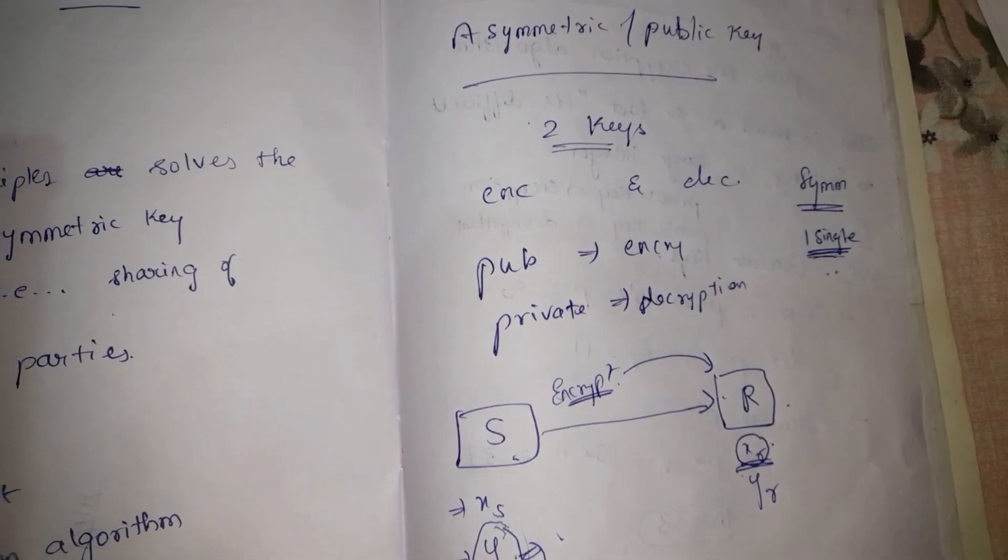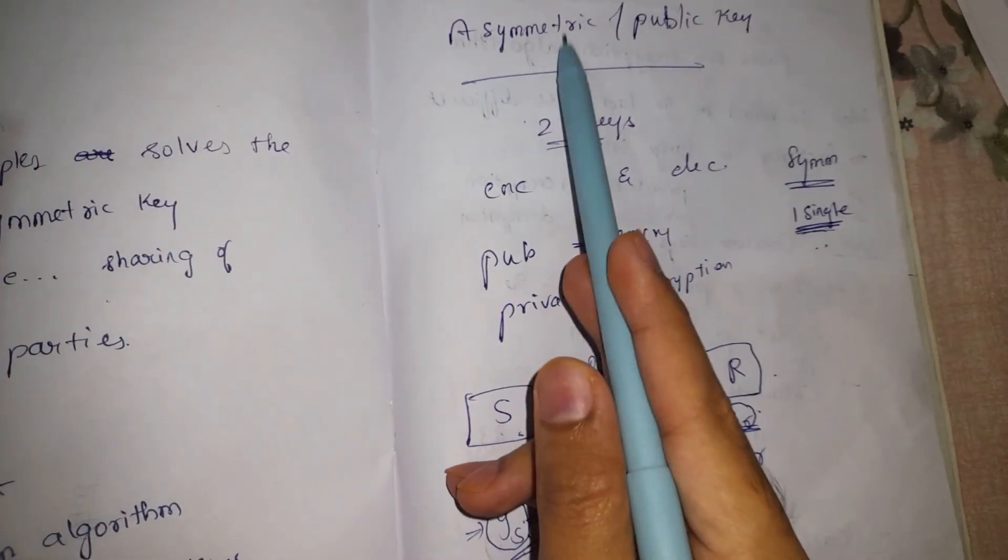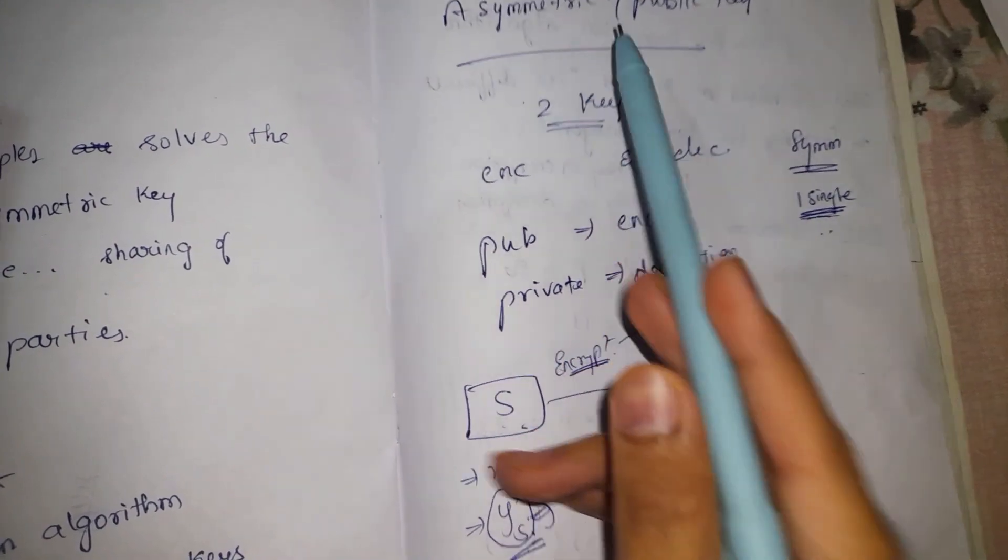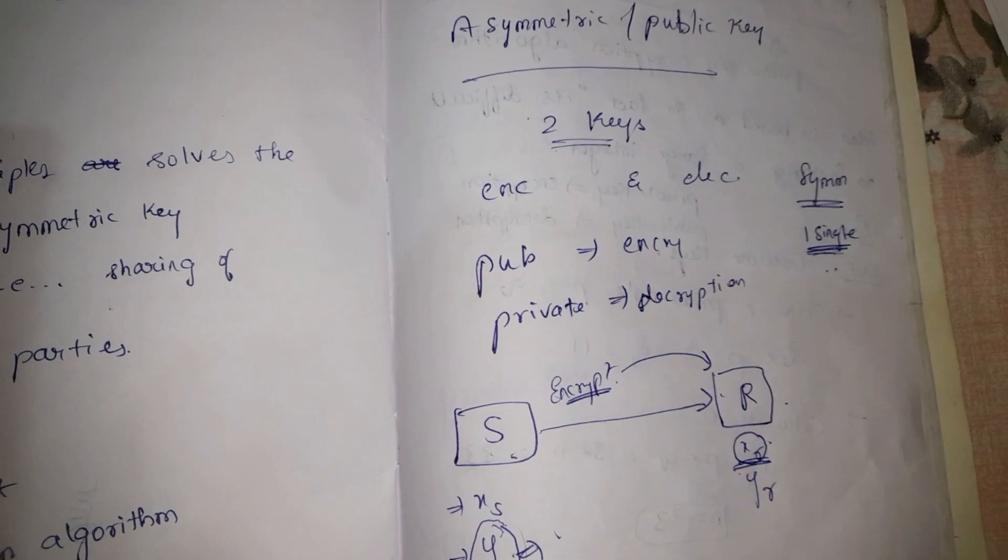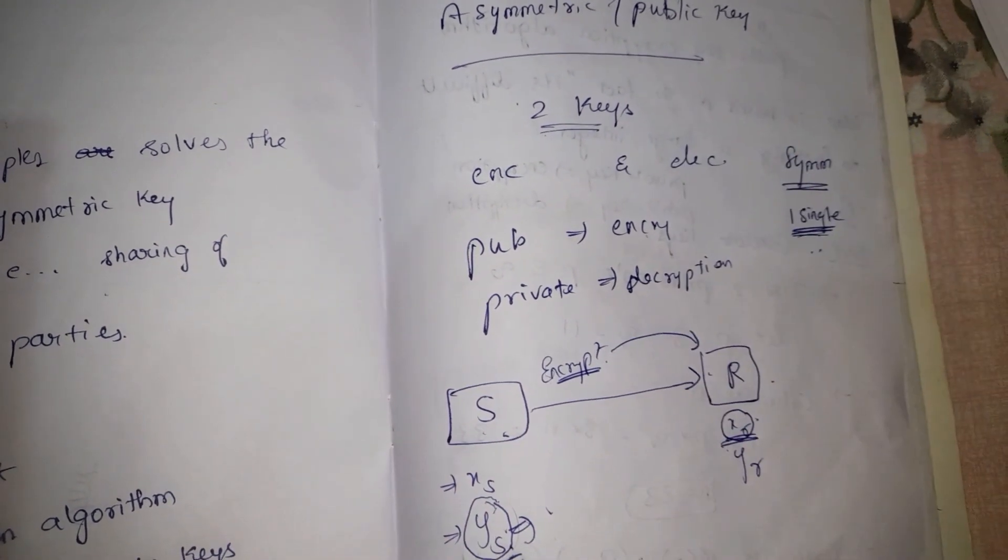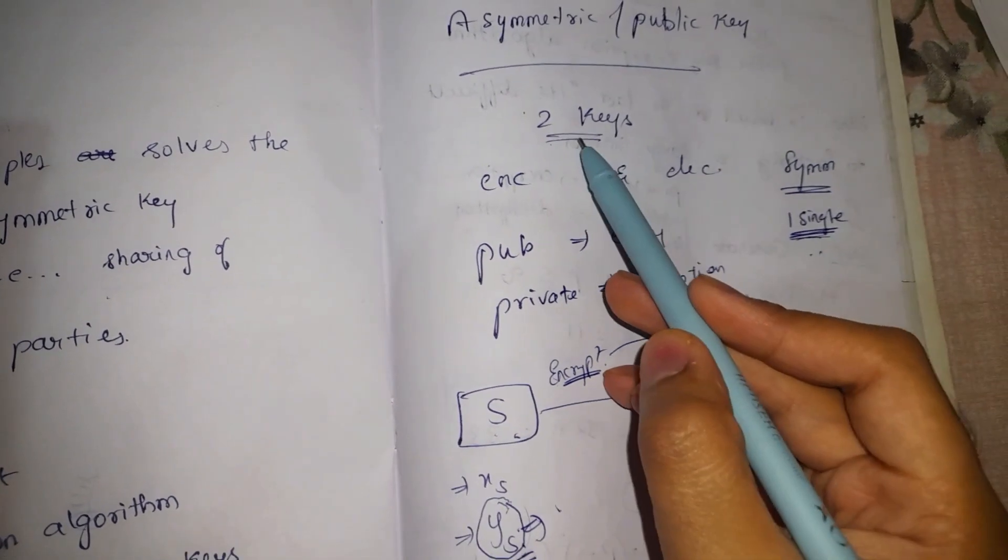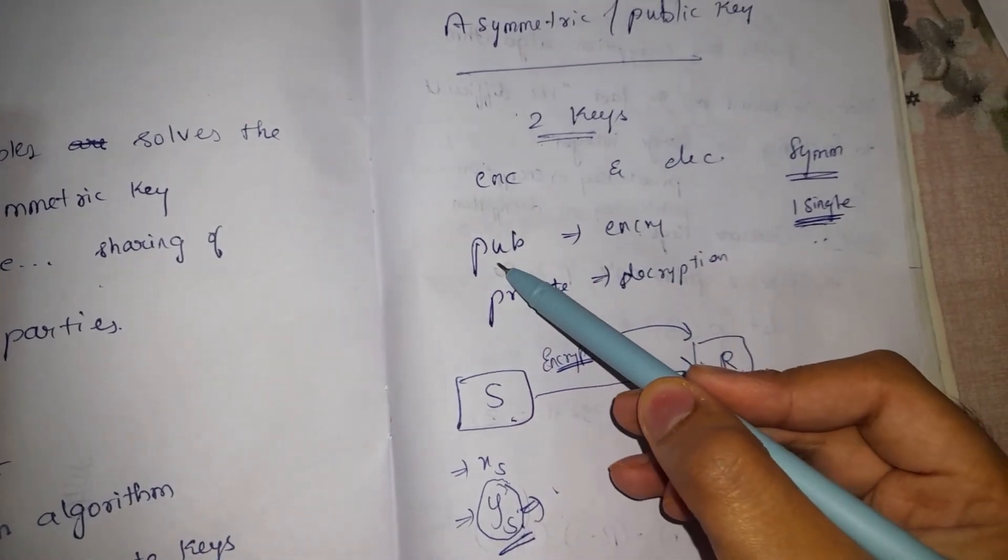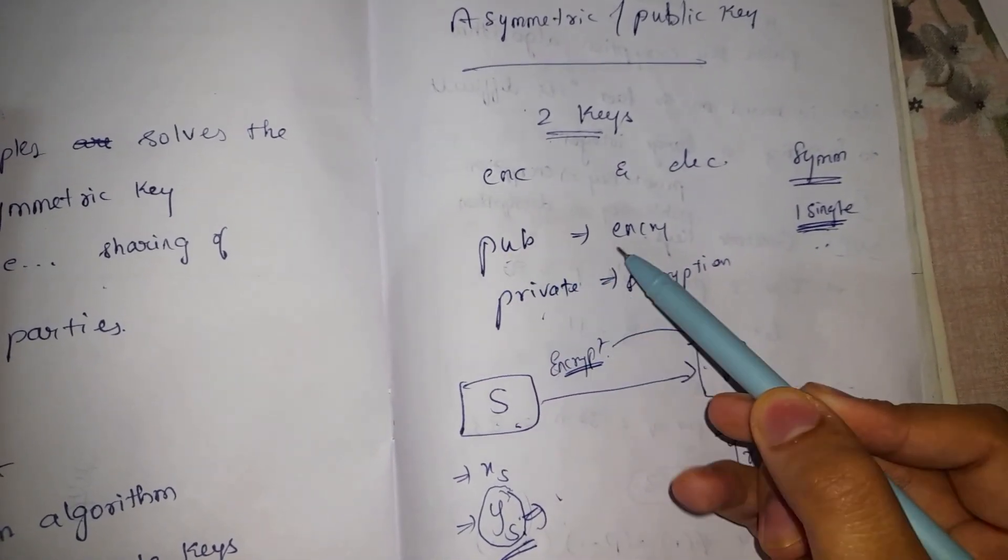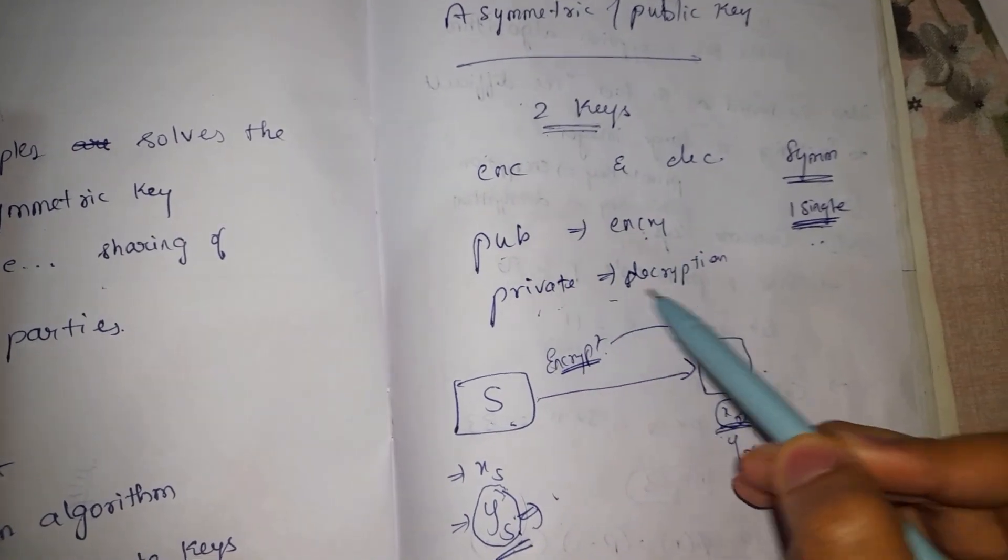We do not want that to happen. That is where asymmetric key cryptography steps in. How is this different from symmetric key cryptography? Basically, it makes use of two keys: public key and private key. Public key will be used for encryption and private key will be used for decryption.